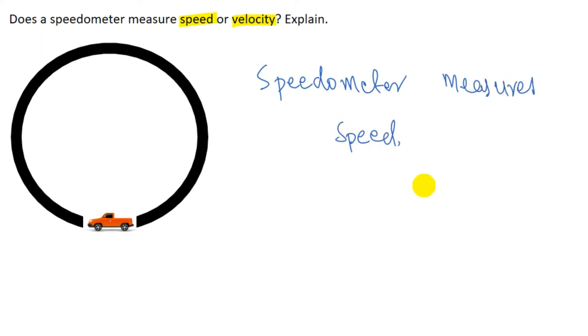Now to support this statement we can take this example. Now here you can see this car which is traveling in a circular path at constant speed. Now you will observe that the speedometer maintains the same reading throughout the motion even though the velocity is changing. So from this example we can conclude that speedometer measures speed.